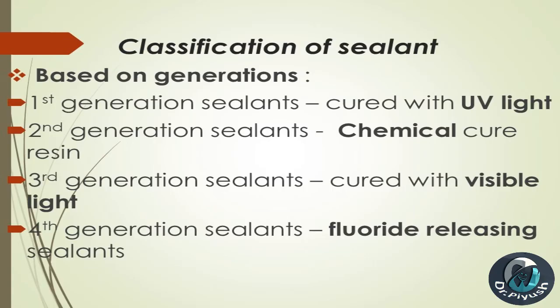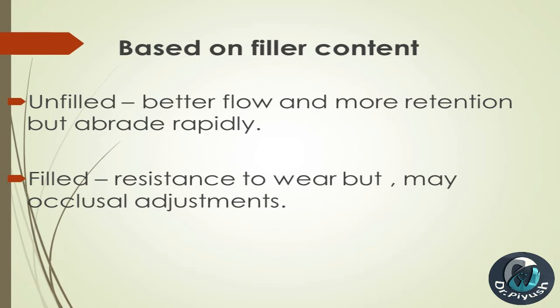Classification of sealants based on generations: first generation sealants cured with UV light; second generation sealants — chemical cure resin; third generation sealants cured with visible light; fourth generation sealants — fluoride releasing sealants. Based on filler content: unfilled sealants have better flow and more retention but abrade rapidly.